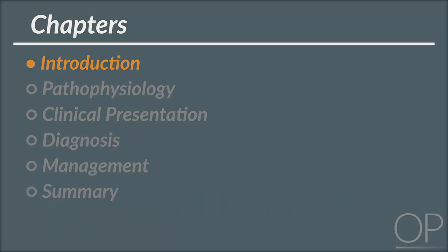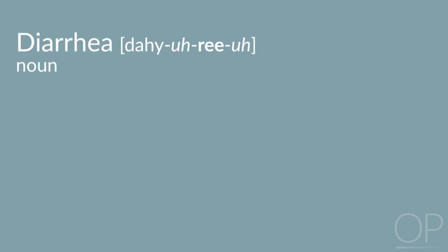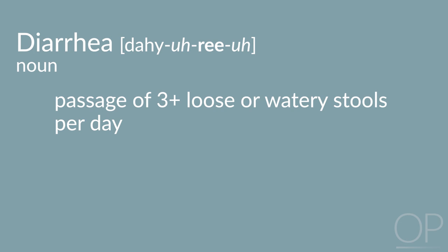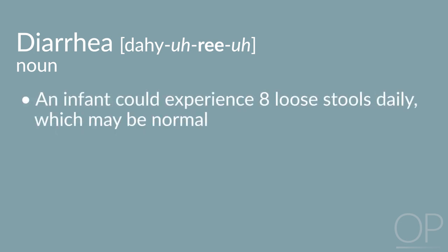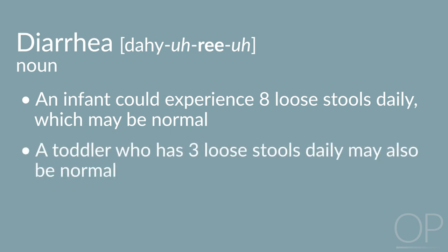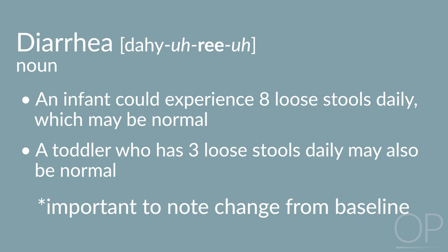Introduction. Diarrhea, as defined by the World Health Organization, is the passage of three or more loose or watery stools per day. In practice, stool volume and consistency can vary greatly. An infant may have eight loose stools daily, which may be normal, and a toddler may have three loose stools daily, which may also be normal. Therefore, trying to determine whether there is a significant change in the frequency and consistency of stool compared with baseline can be used as a helpful gauge of diarrhea.